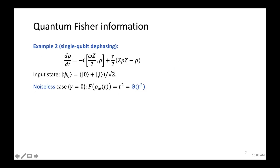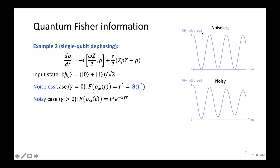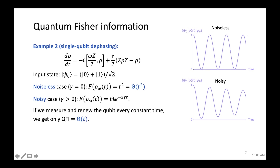Considering noise on this qubit—for an input superposition of |0⟩ and |1⟩ with both Hamiltonian evolution and dephasing noise—in the noiseless case QFI scales as t², but with noise we get t² times an exponentially decaying term. Projecting ρ(t) onto the initial state, the noiseless case oscillates at frequency ω, while the noisy case shows oscillation with an exponentially decaying envelope. The best strategy is therefore to measure and renew the qubit every constant time, giving QFI proportional to t.